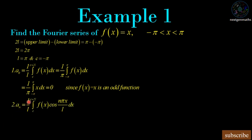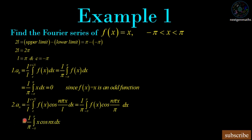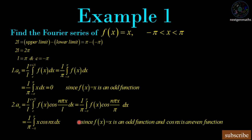The second Fourier coefficient is aₙ = (1/L)∫[c to c+2L] f(x) cos(nπx/L) dx. Substituting c = −π and L = π, we get (1/π)∫[−π to π] x cos(nx) dx. Since x is an odd function and cos(nx) is an even function, their product is odd. Integrating an odd function over the symmetrical limit gives 0, so aₙ = 0.